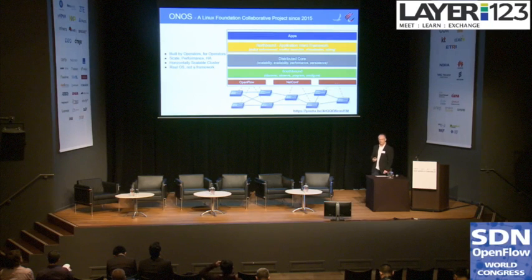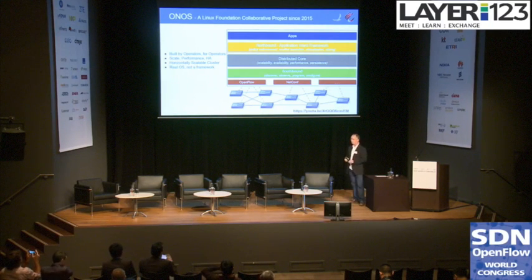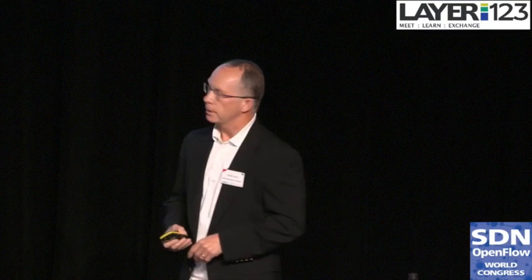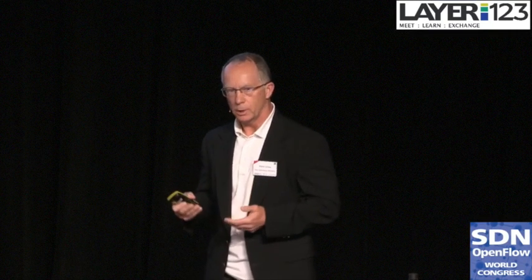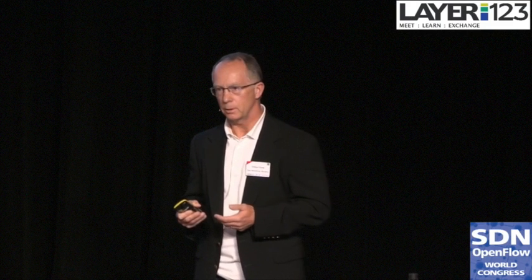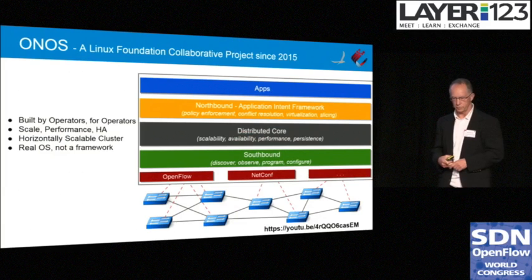I'll start with a little bit of background in case you don't know about ONOS and CORD — just one or two slides on each. ONOS is a network operating system. It has been built by operators for operators, and from the start it was targeted to be a very highly available, scalable, high-performance system — one that would be appropriate for carriers. Nothing existed at that time in terms of controllers, and so we knew that there was going to be a need for this, and we set out to develop such a controller.